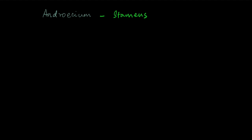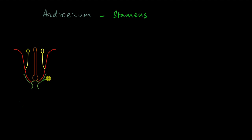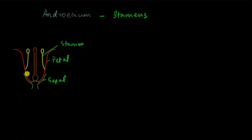The androecium consists of stamens, and the stamens sometimes are attached to petals. This is a simplified diagram of a flower where this is a sepal, this is a petal, and this here is a stamen. As you can see, the yellow stamen here is attached to this petal. Whenever stamens are attached to petals, they are said to be epipetalous stamens.